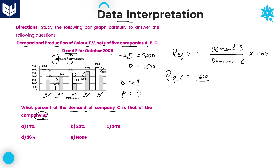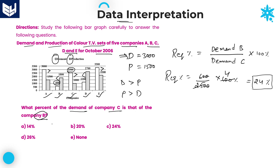Required percentage = 600 divided by demand of company C, which is 2500, multiplied by 100. The two zeros cancel. 25 fours are 100, so this gives 6 × 4 = 24 percent. Demand of company B is 24% of demand of company C.